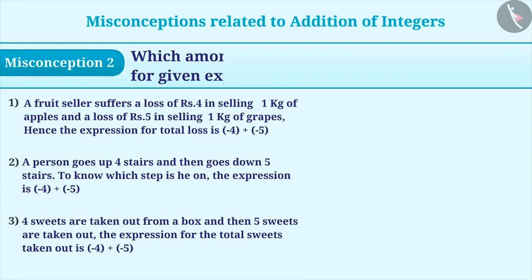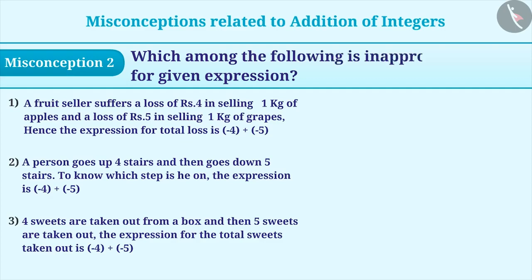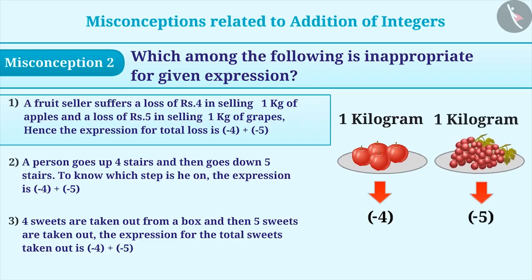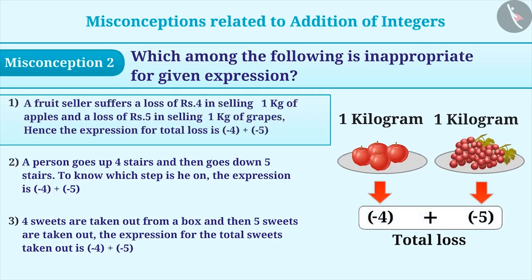Misconception 2. Which among the following is inappropriate for the given expression? The first statement shows that the fruit seller faces a loss of Rs. 4 by selling apples and a loss of Rs. 5 by selling grapes. As you know, loss is represented by a negative sign. Since the losses are Rs. 4 and Rs. 5, the total loss can be obtained by adding minus 4 and minus 5. Thus, statement 1 is true for the given expression, meaning it cannot be the answer to the given question.